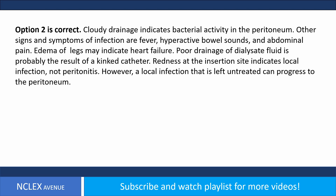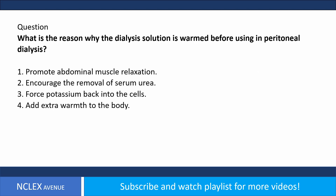Other signs and symptoms of infection are fever, hyperactive bowel sounds, and abdominal pain. Edema of the legs may indicate heart failure. Poor drainage of dialysate fluid is probably the result of a kinked catheter. Redness at the insertion site indicates local infection, not peritonitis; however, a local infection left untreated can progress to the peritoneum.